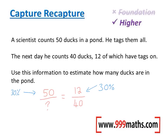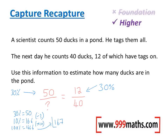So I need to make the left side equal to 30% — 50 out of what is equivalent to 30%? If 50 equals 30%, dividing by 3 gives 10% as 50 divided by 3, which is 16.6 recurring. Multiplying that by 10, 100% is 166.6 recurring. We can't have 166.6 recurring, so I'm going to round that up to 167. And that's my answer.